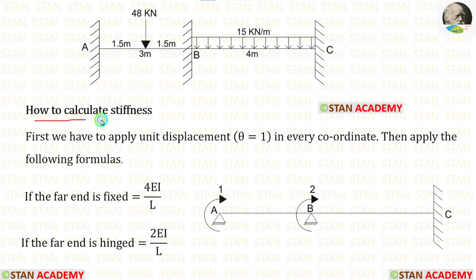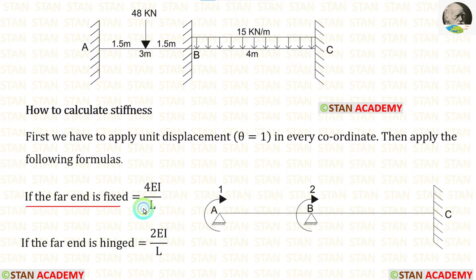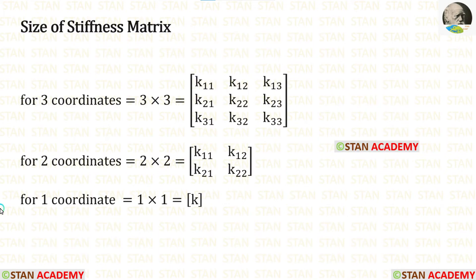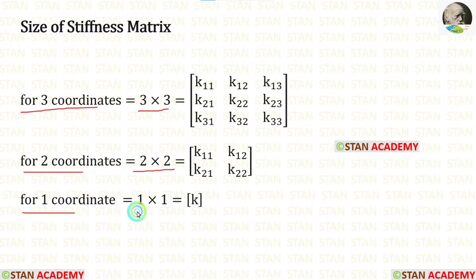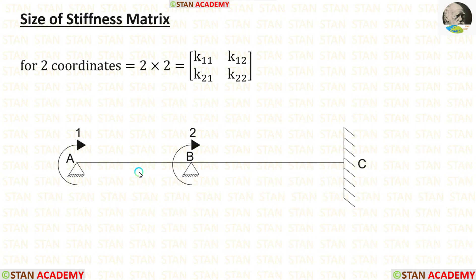Now let us find the stiffness matrix. To calculate stiffness, we apply unit displacement at every coordinate and use the formulas: if the far end is fixed, the formula is 4EI/L; if the far end is hinged, the formula is 2EI/L. Since there are 2 coordinates in this analysis, the size of the stiffness matrix will be 2×2.